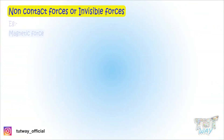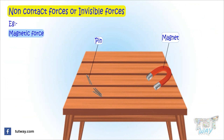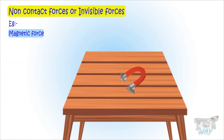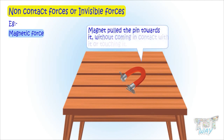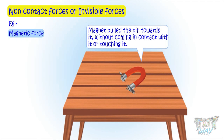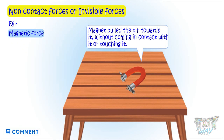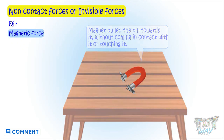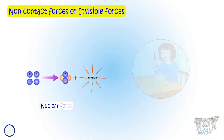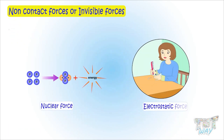Another example of a non-contact force is magnetic force. Here is a pin — now bringing a magnet closer to it. The magnet attracts the pin. The pin moves toward the magnet without any contact between them. So there is an invisible or non-contact force acting here. More examples of non-contact forces are nuclear force and electrostatic force.